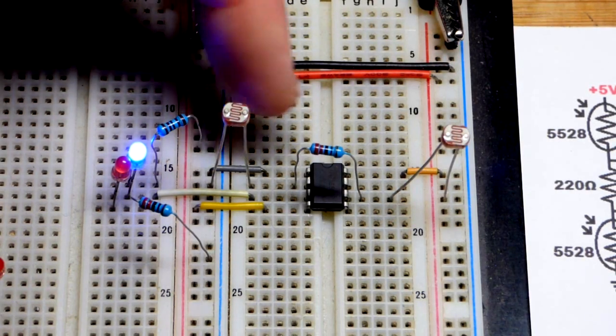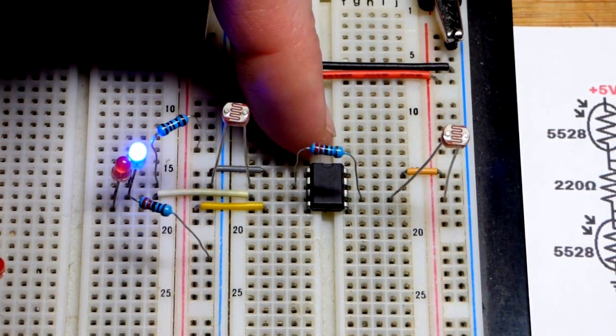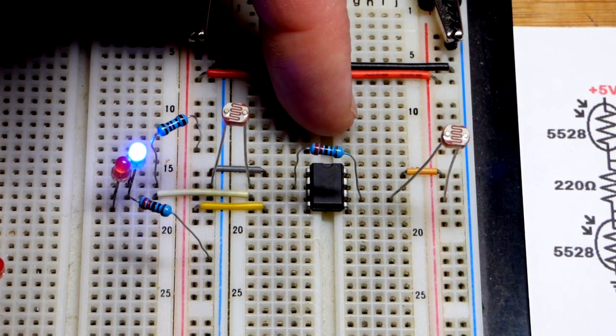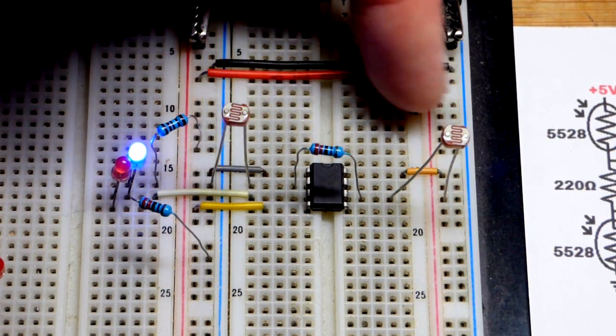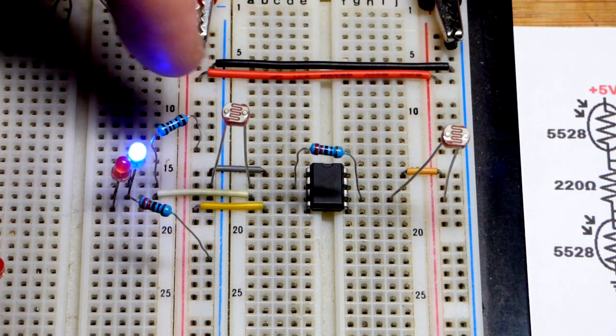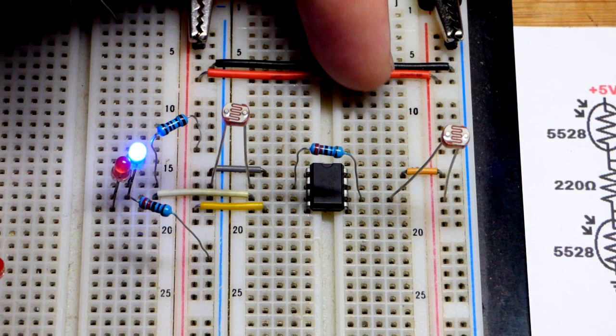In this video we're going to look at a circuit. This is a 555 timer wired up basically as a Schmidt trigger comparator. Right now there's an equal amount of light falling on the light dependent resistors and the output is low.